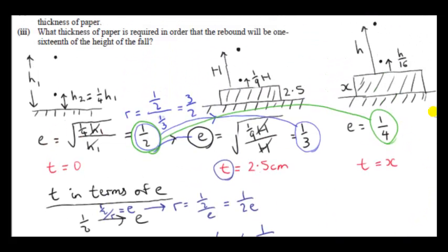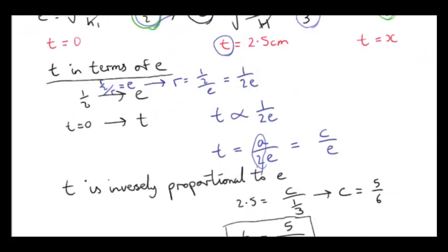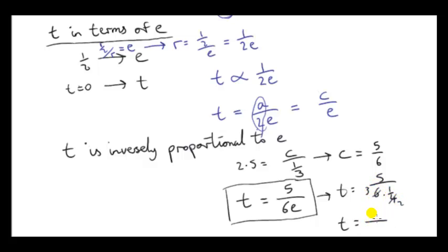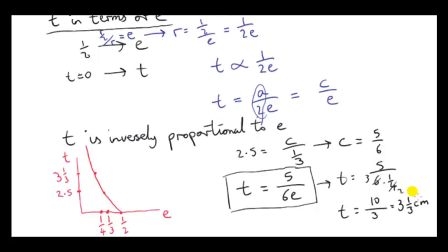At last we have a formula connecting the thickness of the paper to the coefficient of restitution: t equals 5 over 6e. In this final situation e is one quarter, so we plug in one quarter for e. We get 5 divided by 6 times one quarter, which equals 10 over 3 — matching our earlier answer.